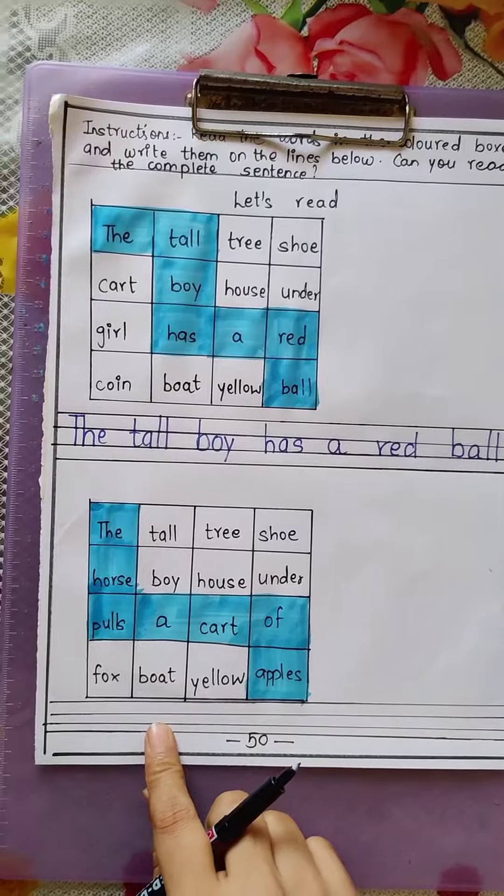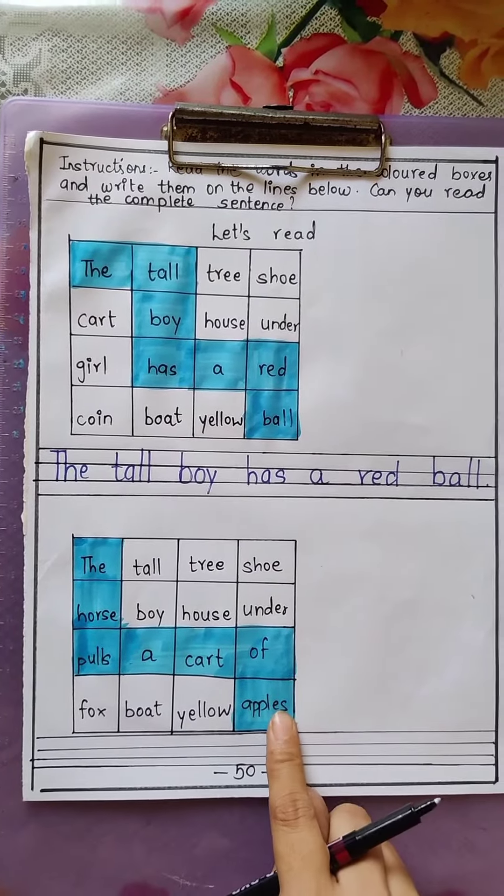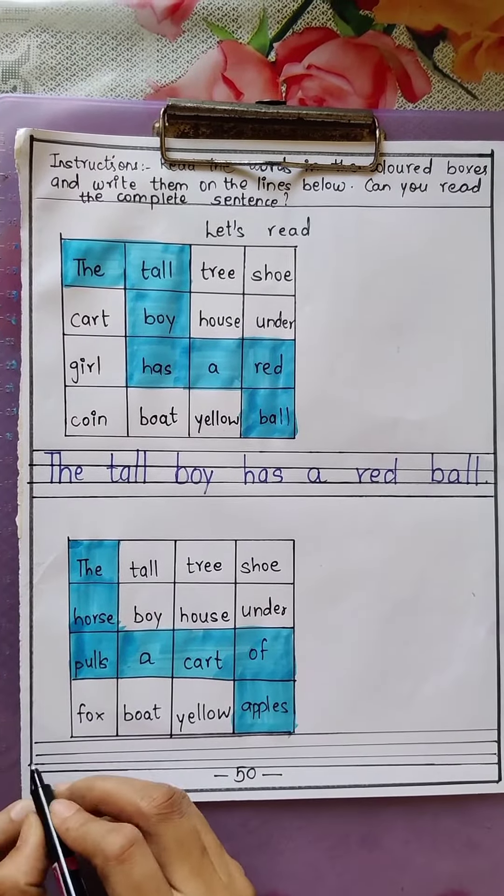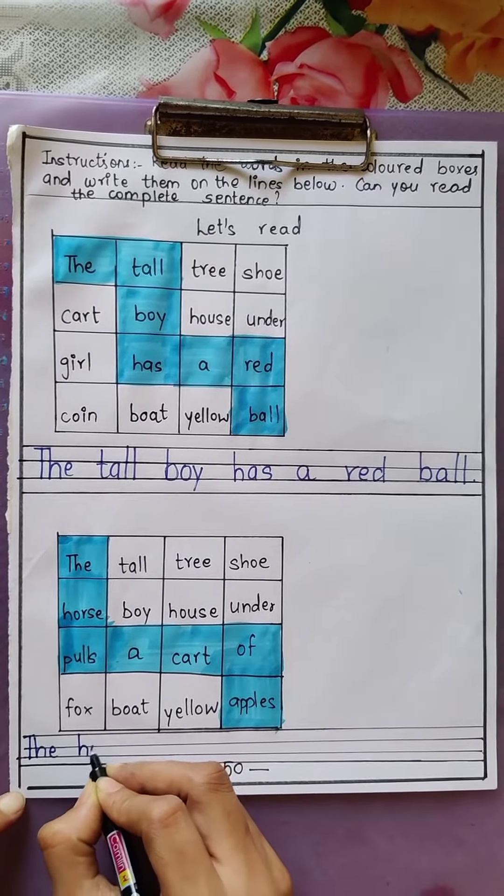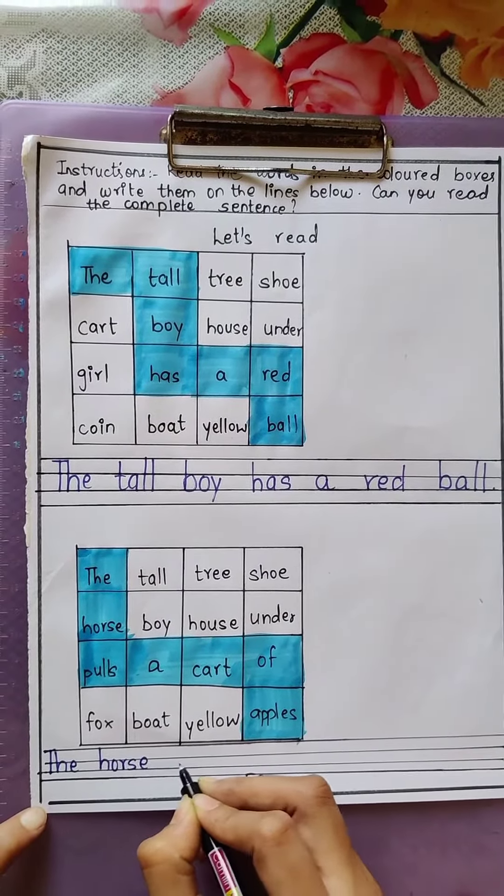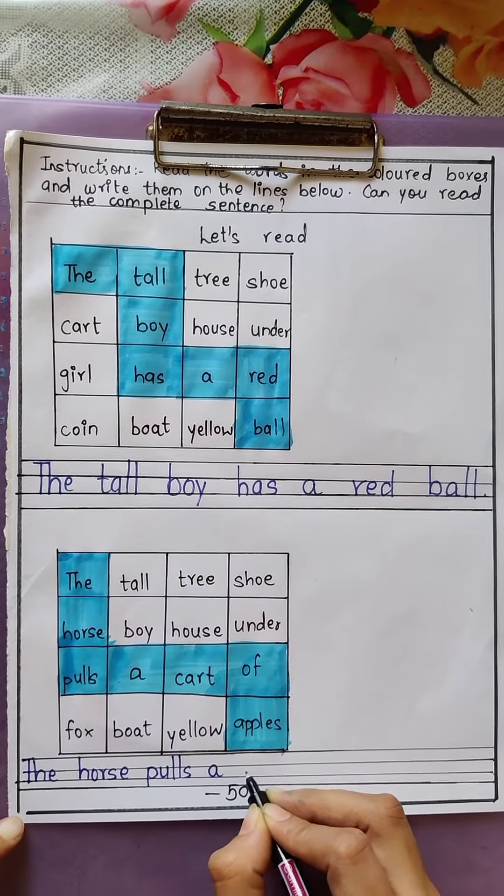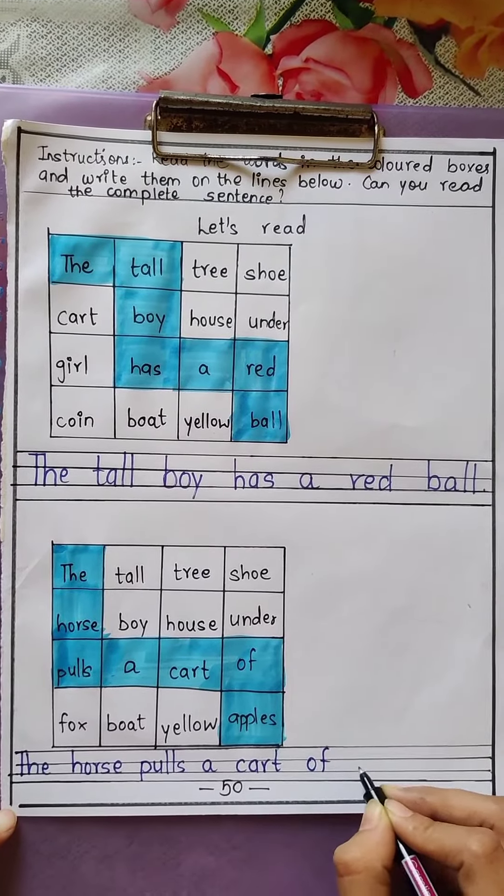Now let us see the second one. The horse pulls a cart of apples. So we will write the sentence here: The horse pulls a cart of apples.